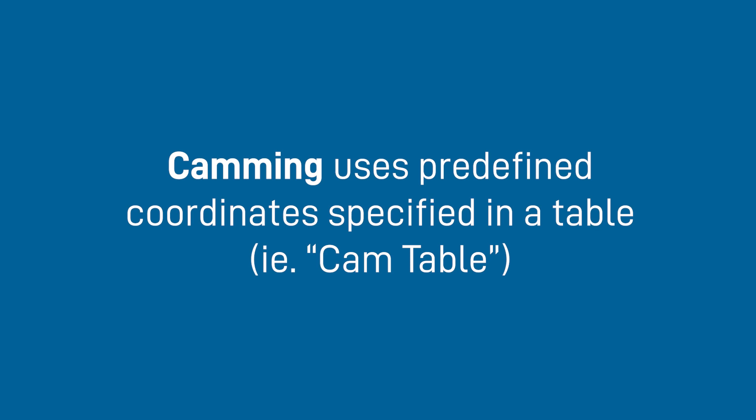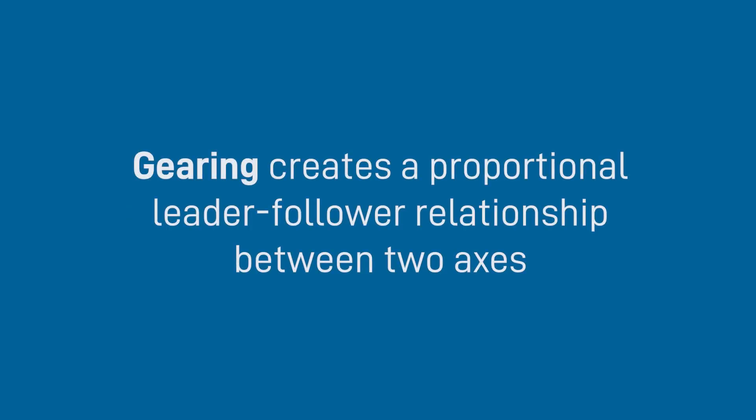In other words, you specify a specific position or velocity of your follower axes for a given position of your leader axis. Gearing, on the other hand, creates a strictly proportional relationship between two axes without the need of a table. Basically, for every fixed number of encoder counts the leader makes, the follower will make as well.